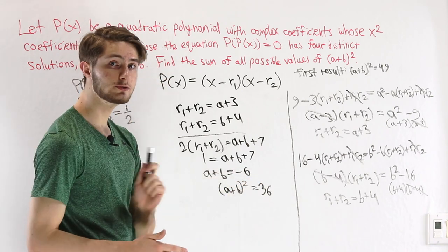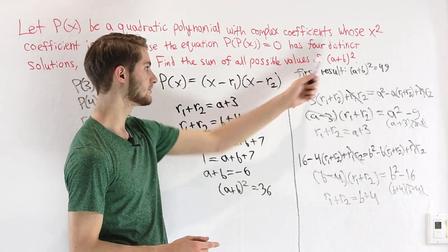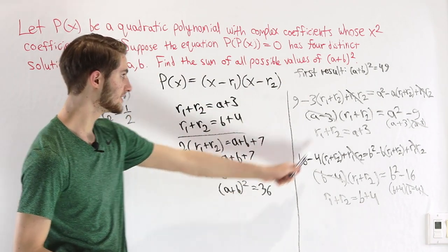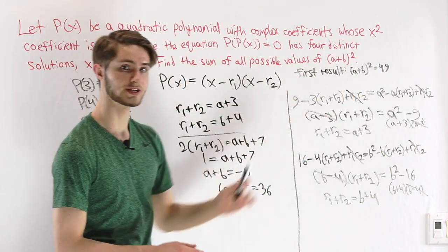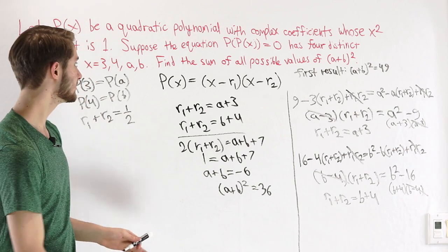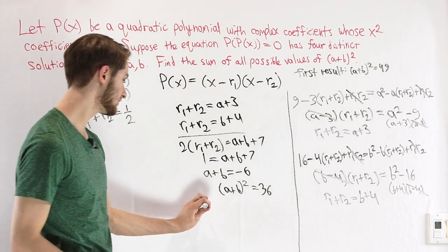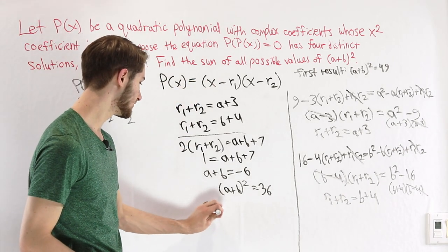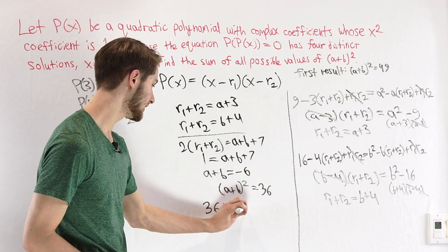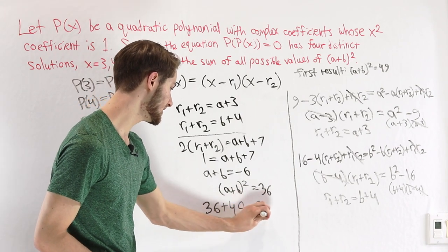So the two possible values of A plus B squared are 36 and 49. Our final answer — the sum of those two values — is 36 plus 49, which equals 85.